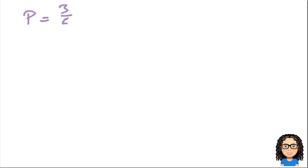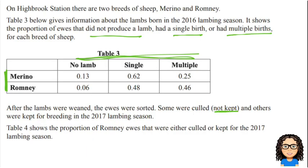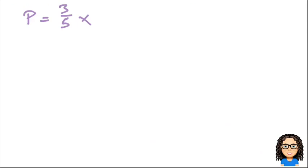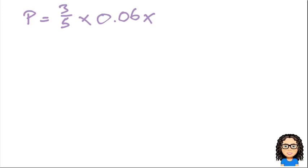So the probability is 3 fifths times... Now I need the probability of no lamb for the Romney, so I go back to this table here. Romney not getting a lamb is 0.06. And I want the chance of being culled — Romney ewes that were culled and didn't have a lamb is 0.88. So I multiply those together: 3/5 × 0.06 × 0.88, and that gives me 0.032.